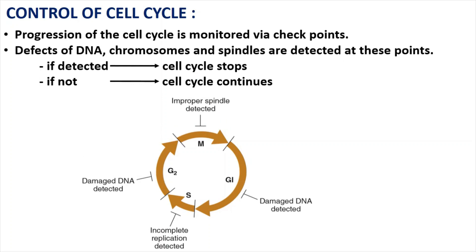At these checkpoints, the cell is checked for DNA damage, chromosome damage, and so on. If any damage is detected, the cell cycle is stopped at that checkpoint. If no damage is detected, the cell cycle can continue. For this continuation, there are compounds called cyclins and cyclin-dependent kinases, which we will discuss next.